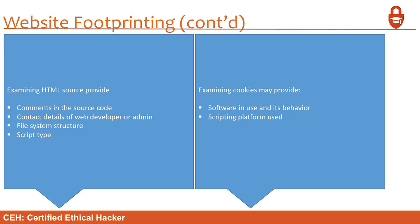Website footprinting also involves examining HTML source code, which can provide: comments in the source code, contact details for the web developer or admin (rarely found these days), and file system structure and script type. Examining cookies may reveal software in use and scripting platforms — though cookies are pretty plain and dumbed-down today, and most are encrypted. If they're not encrypted, that's a finding, because everyone should be encrypting their cookies to prevent revealing this kind of information.